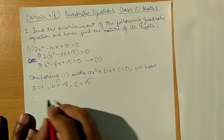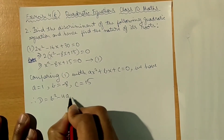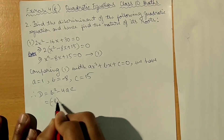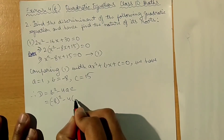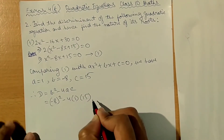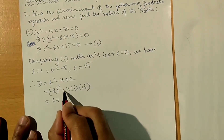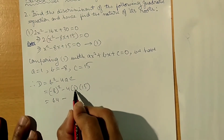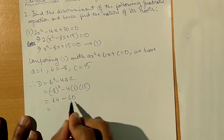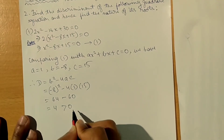Now therefore, the discriminant D is equal to b² minus 4ac. This is equal to minus 8 squared minus 4 into 1 into 15, which equals 64 minus 60, so D is equal to 4.